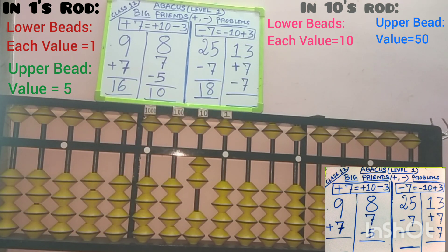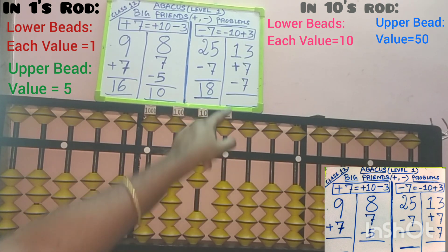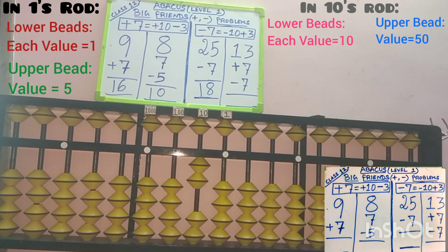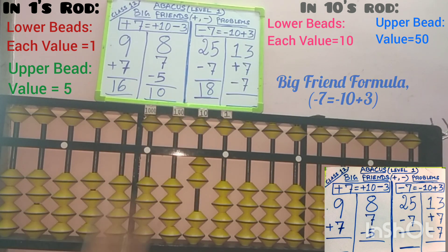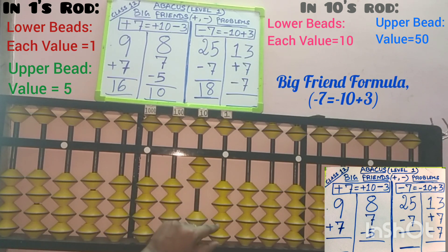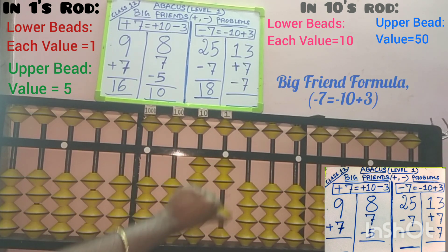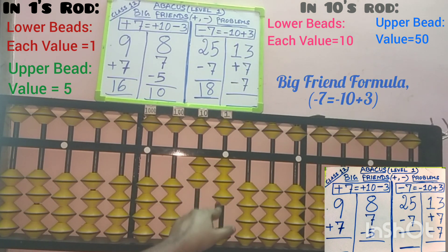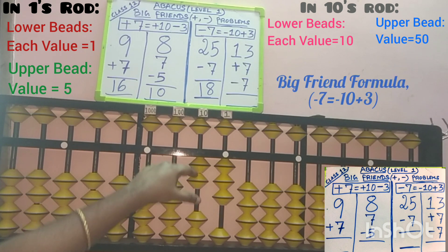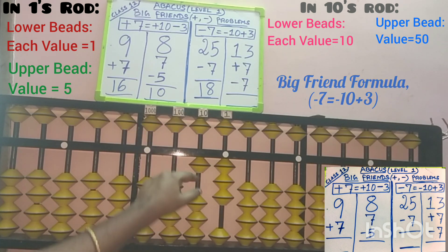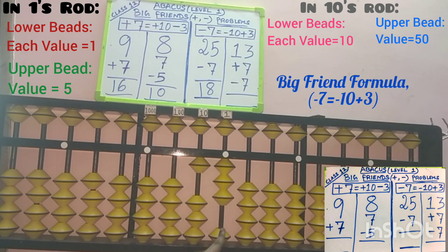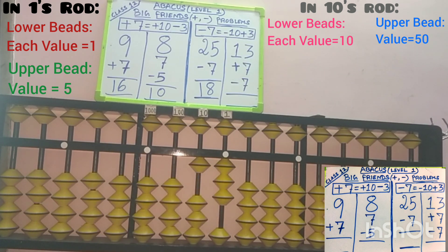Next, third row: minus 7. We have to remove 7 beads in the 1s slot since 7 is in the 1s place. In the 1s slot, no beads are added here, so we cannot remove 7 directly. Apply the big friend formula for removing 7 — 7's big friend is 3. In the question, minus 7 is there, so add the friend of 7 in the 1s slot — do plus 3: 1, 2, 3. 3 is added. While adding the friend, remove the boss in the 10s place — minus 10. 1 bead removed from the answer point, minus 10 completed. By doing minus 10 plus 3, minus 7 is completed using the big friend concept. So 13 is the answer.